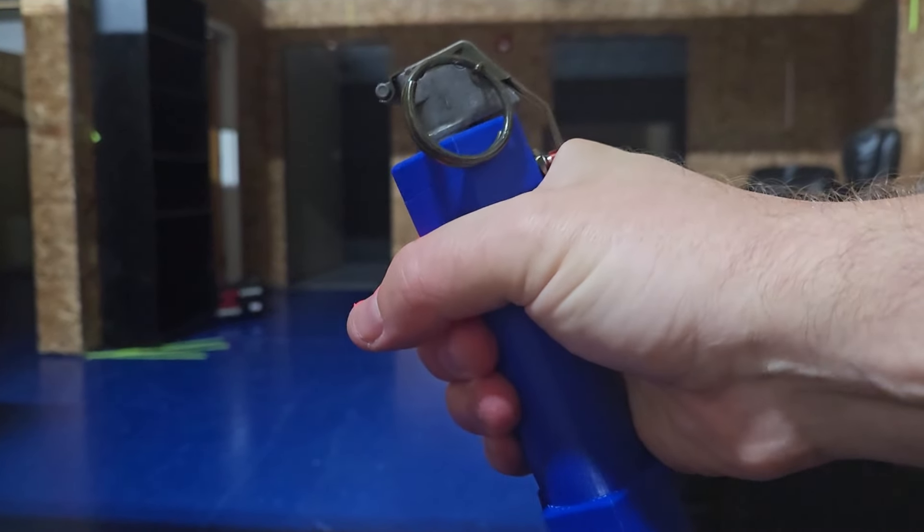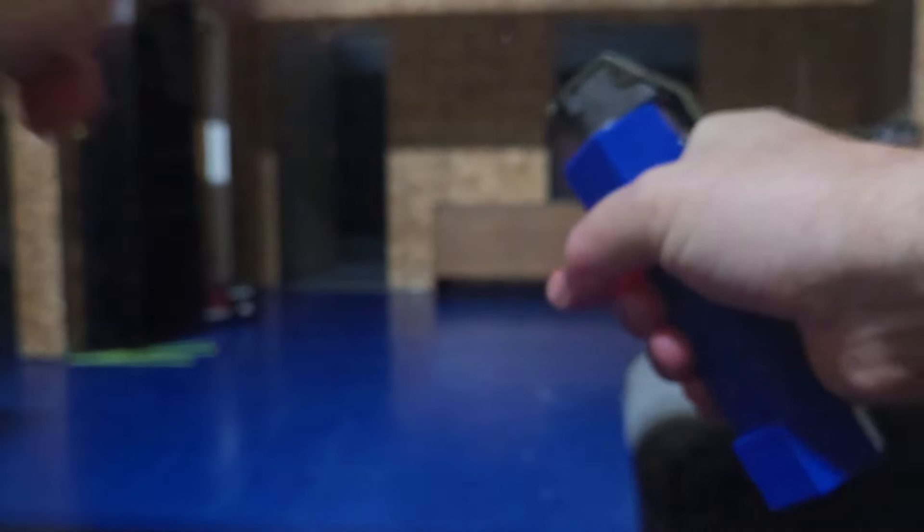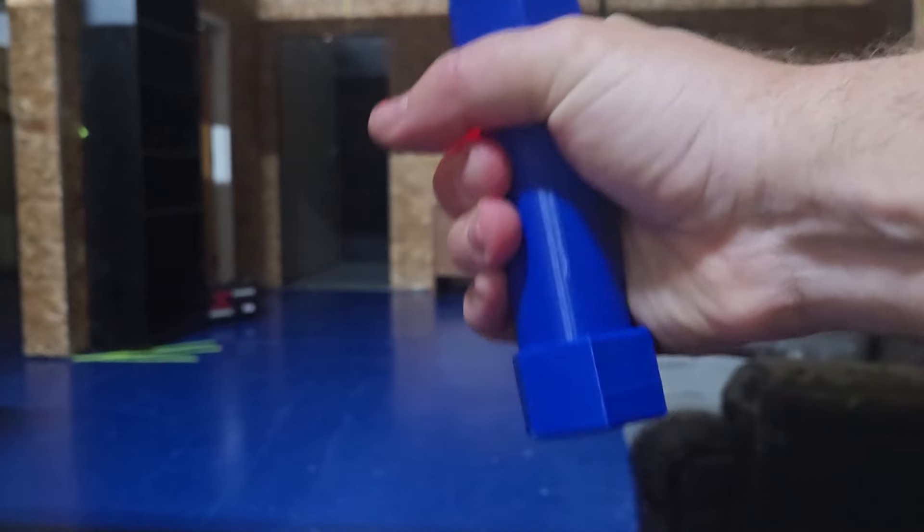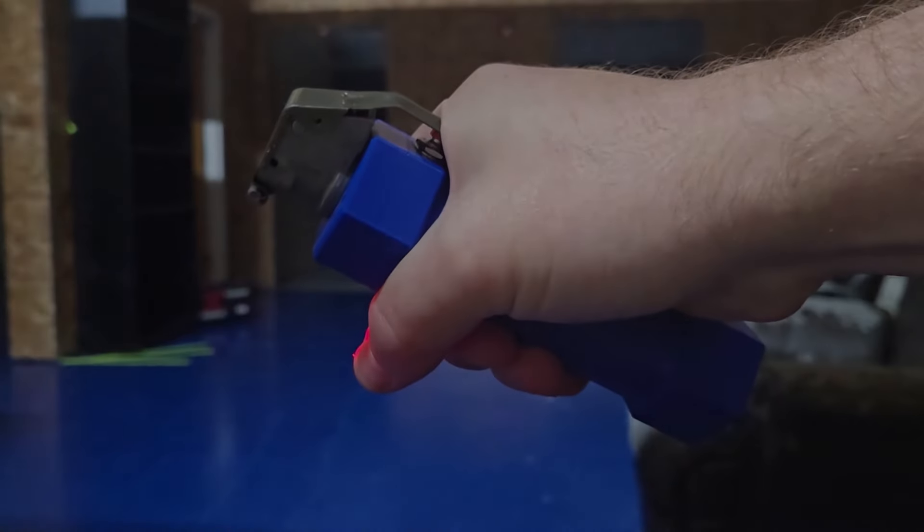I'm going to hold down the spoon firmly and set my pin ready to pull. Pull my pin out. At this point, I'm going to throw the grenade. This spoon is under spring tension so it will fly off just like a real Flashbang grenade.